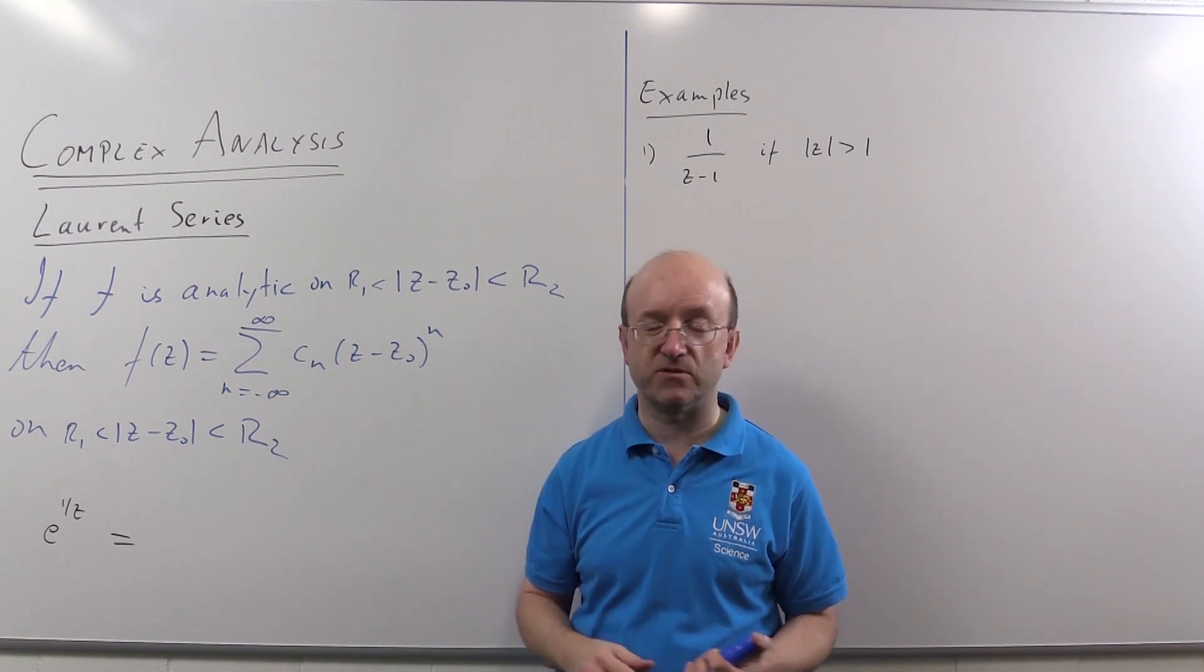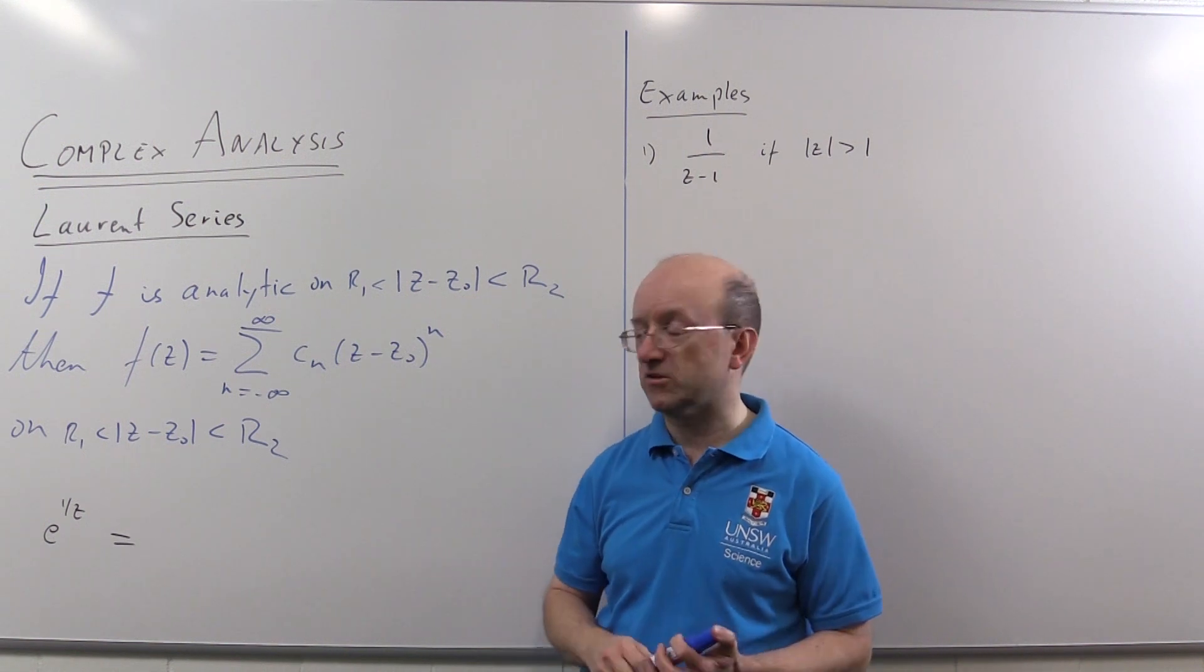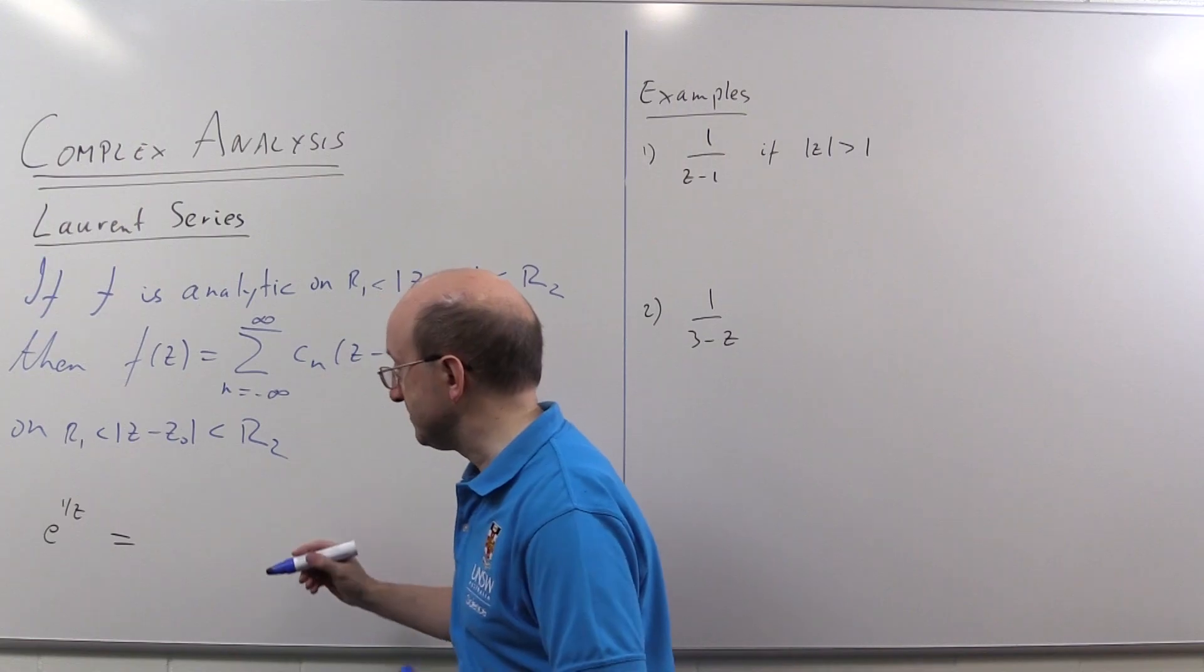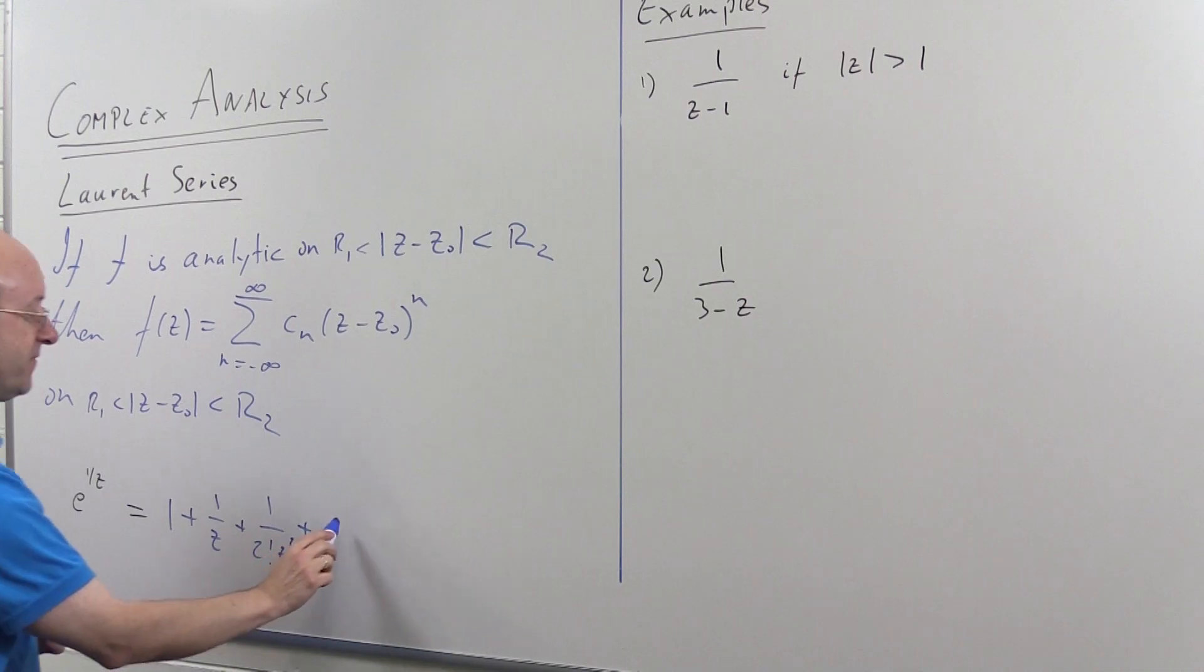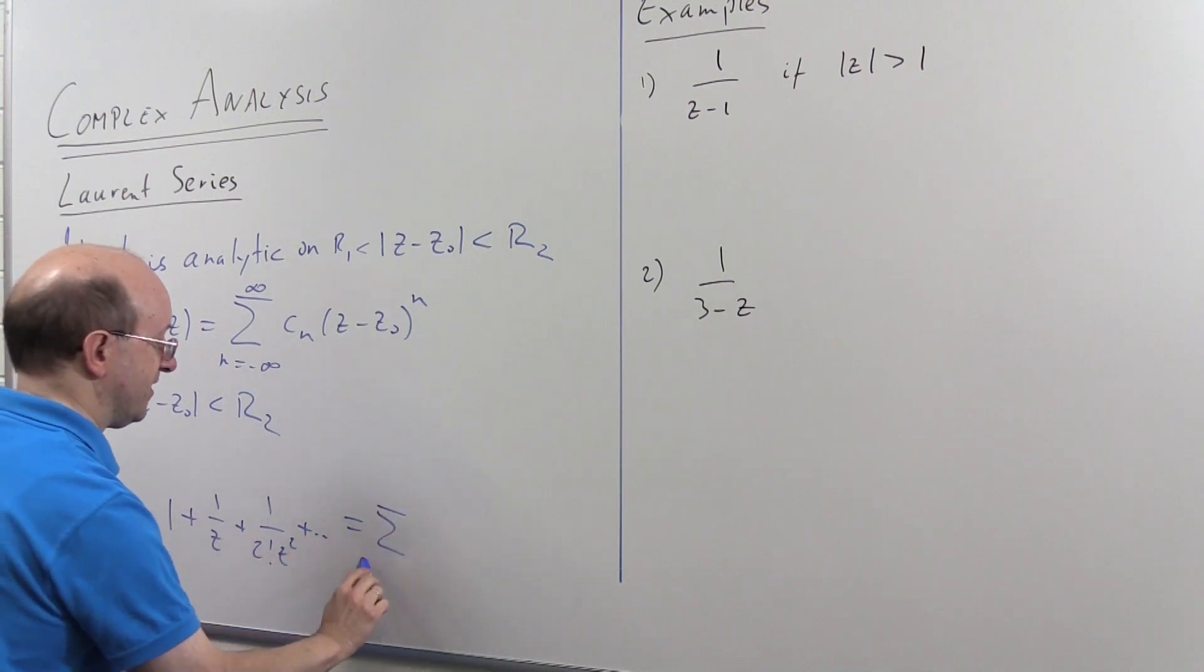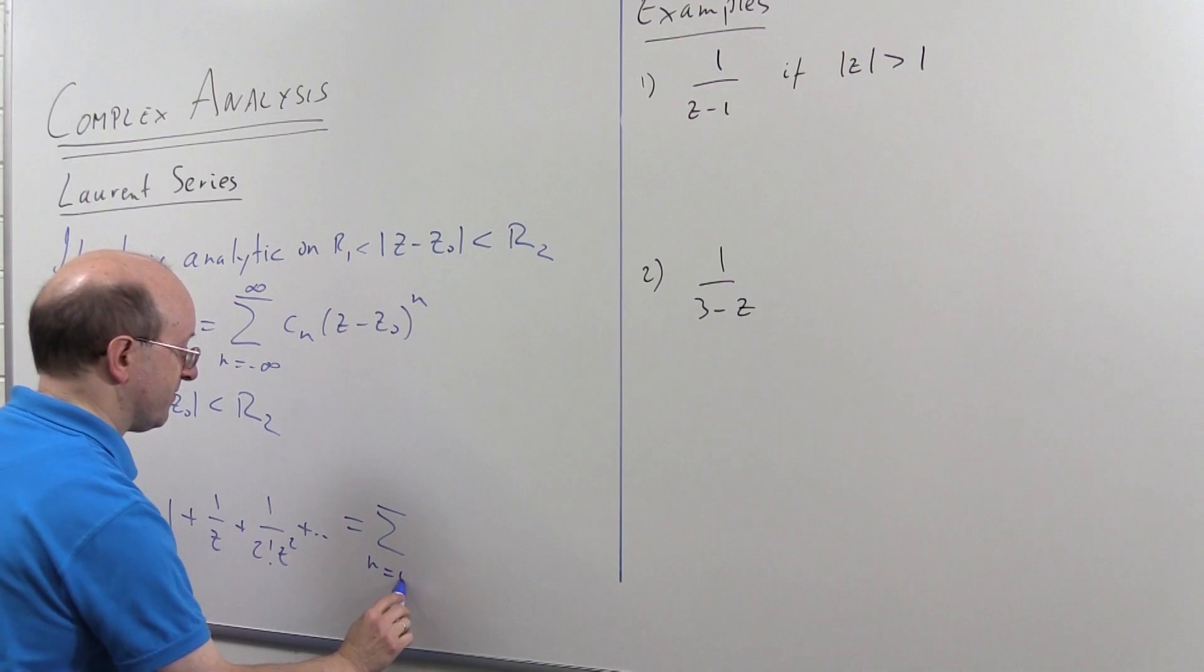So this would be 1 plus 1 upon z plus 1 upon 2 factorial z squared plus and so on, or in sigma notation we may also write it.